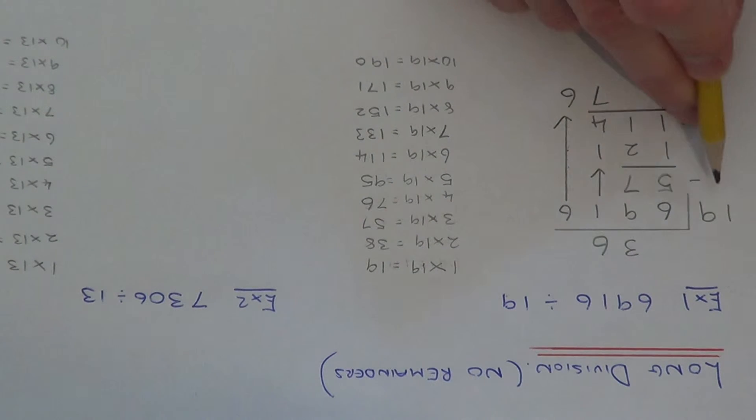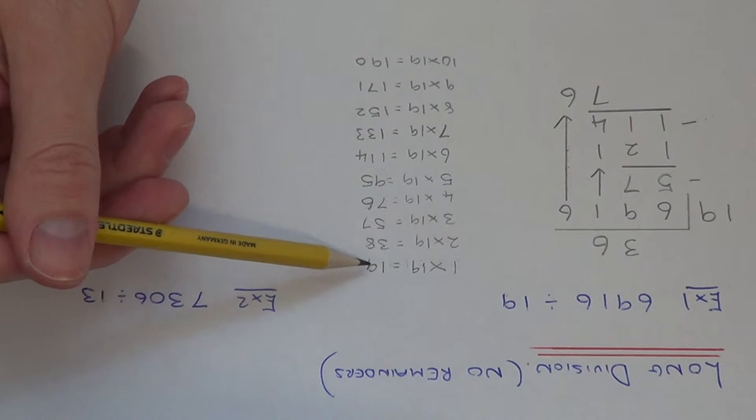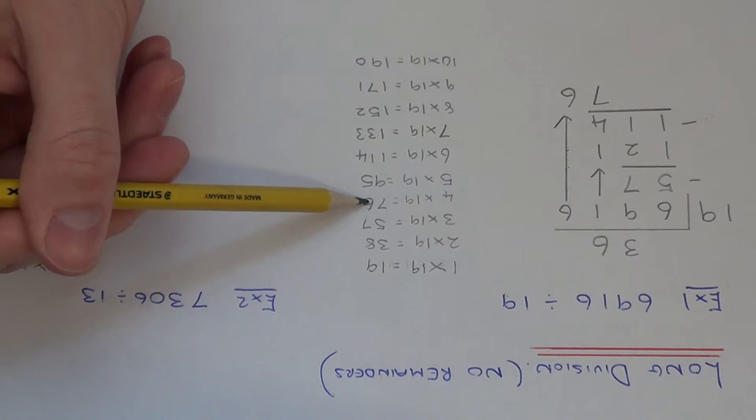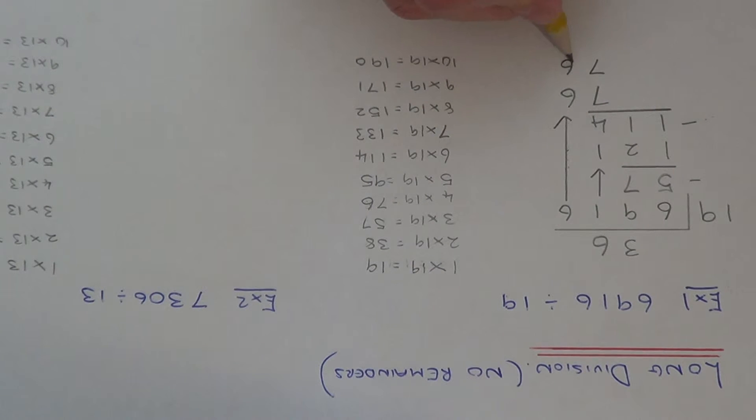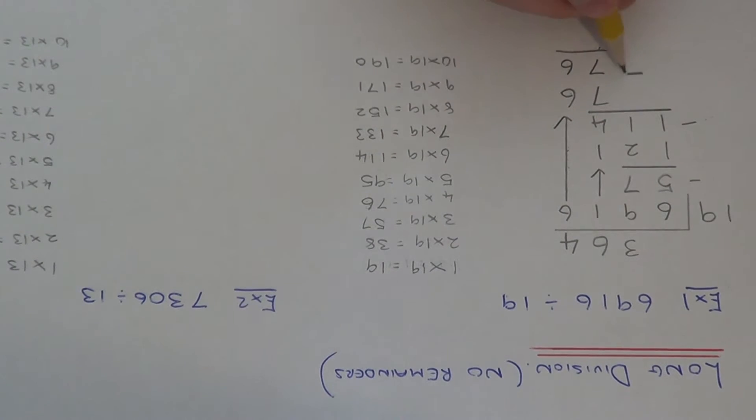So now we've got to do 76 divided by 19. So again look through your multiples of 19, 19, 38, 57, 76, so 4 times 19 goes exactly. So if we put the 4 at the top, and as you can see, nothing is our remainder, which is what we expected.